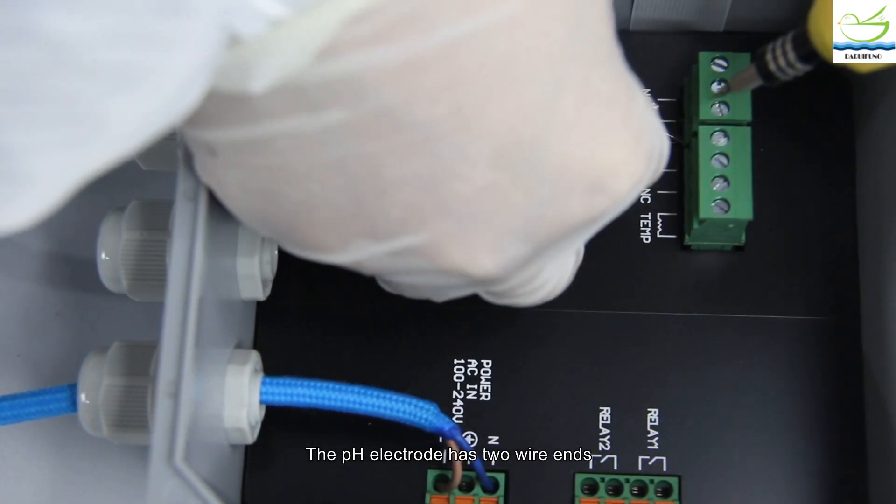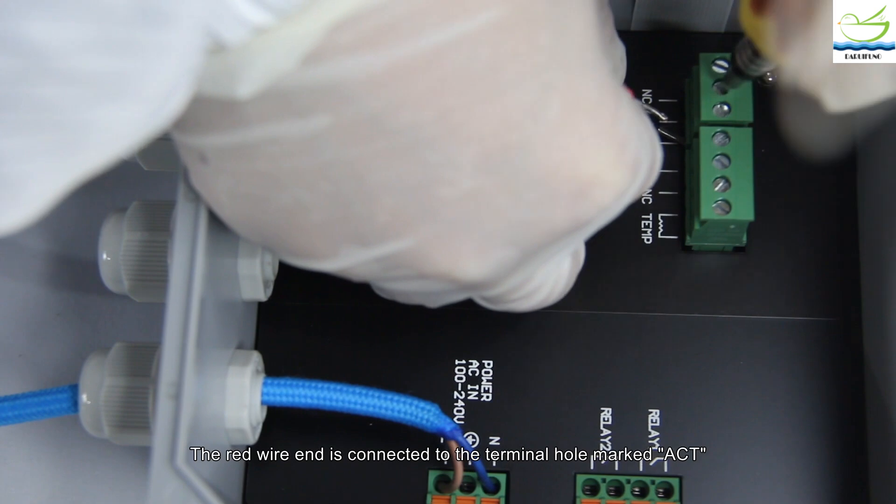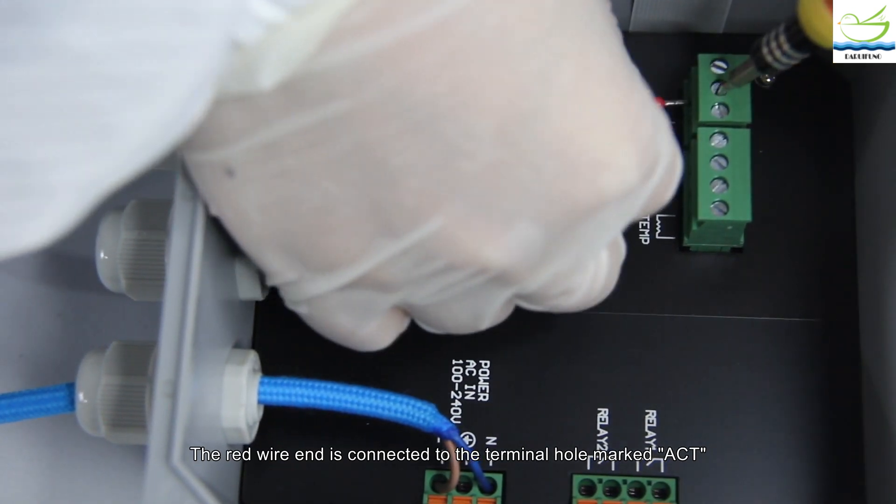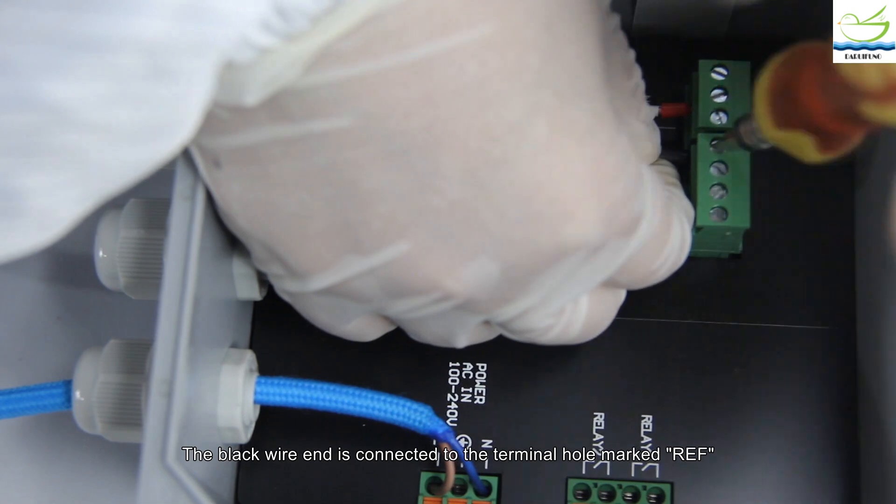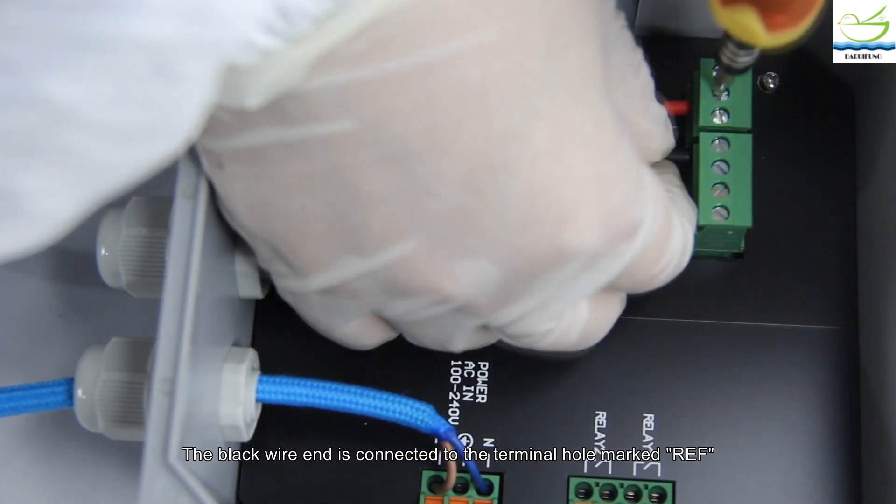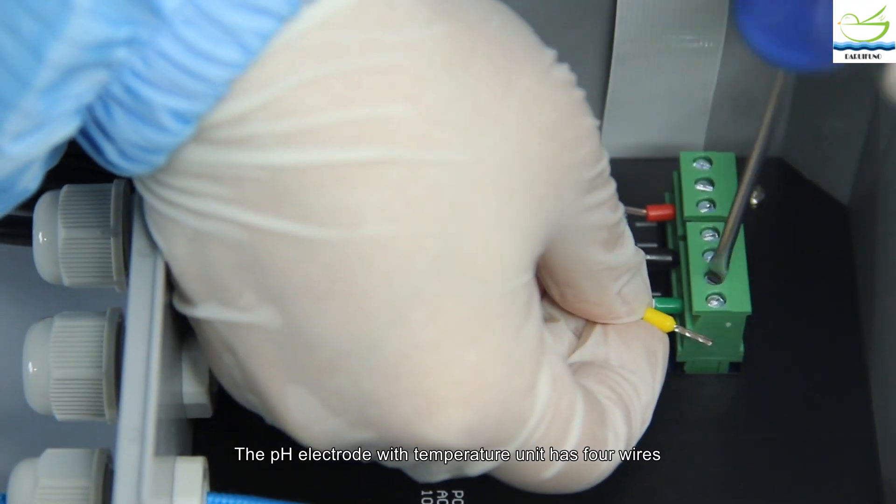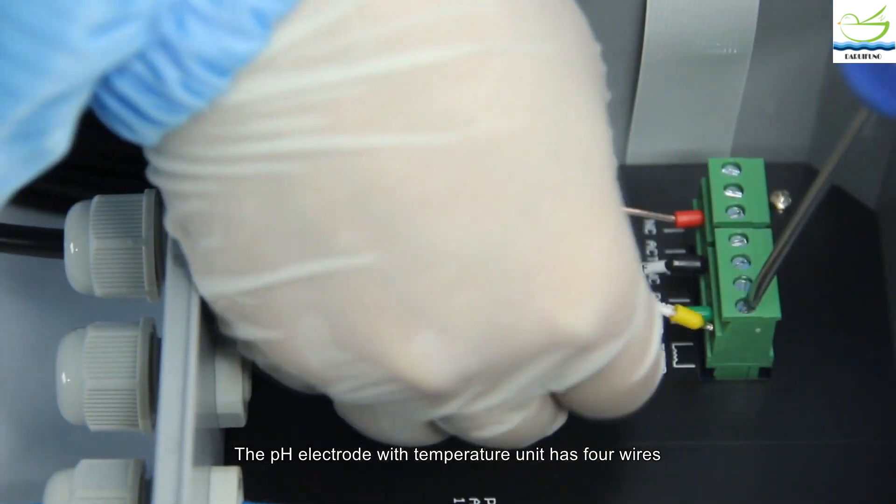The pH electrode has two wire ends. The red wire end is connected to the terminal hole marked F. The black wire end is connected to the terminal hole marked R. The pH electrode with temperature unit has four wires.